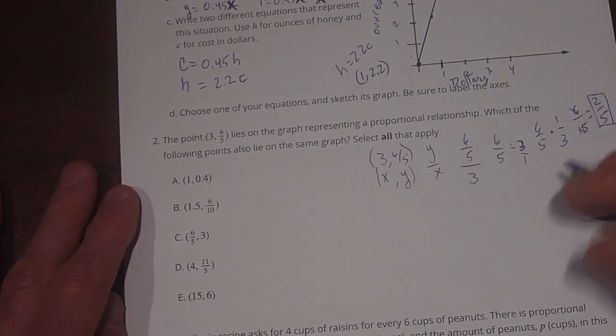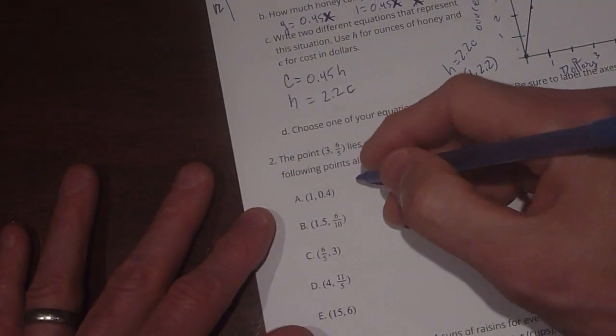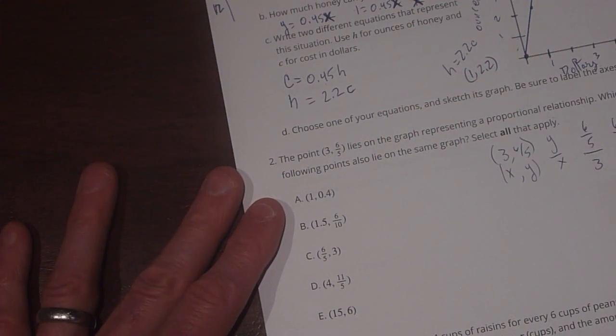So that's going to be our slope or our constant of proportionality. All right, so we know that that's going to equal y equals 2 fifths x.